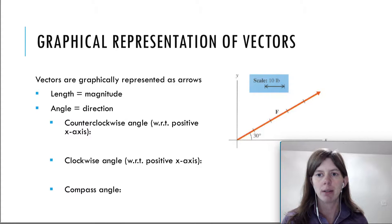To represent vectors, there's a graphical way, and that is to use arrows. The length of the arrow represents the magnitude, so the amount, and the angle represents the direction. This particular picture, I have a vector, and there are three different ways to represent the direction of that vector. You see that the angle is 30 degrees in the picture, and that would be a counterclockwise angle.